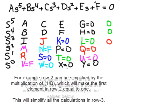For example, row two can be simplified by the multiplication of one over B, which will make the first element in row two equal to one. This will simplify all of the calculations in row three.